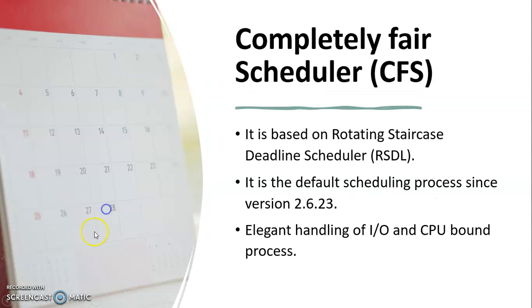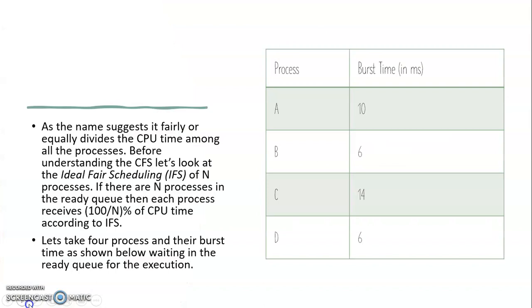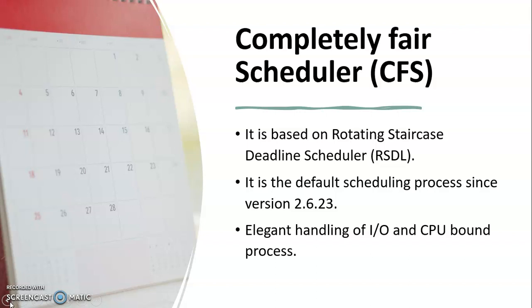CFS is based on a rotating staircase deadline scheduler. It is the default scheduler for processes since version 2.6.23, with elegant handling of I/O and CPU-bound processes. It was merged into the 2.6.23 Linux kernel in October 2007, and is the default scheduler for normal class tasks — those with no real-time execution constraints. It handles CPU resource allocation for executing processes and aims to maximize overall CPU utilization while also maximizing interactive performance.